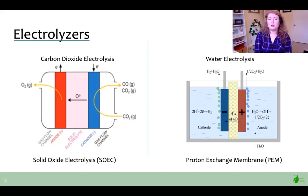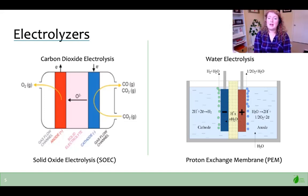For hydrogen production, we are using a proton exchange membrane electrolysis cell, or PEM. PEM has two electrodes pressed against a proton-conducting polymer electrolyte which form a membrane electrode assembly in a zero-gap configuration. This membrane is selectively permeable to protons and is 100 to 300 micrometers thick to avoid ohmic losses. In PEM, water reacts at the anode forming protons and oxygen ions. Hydrogen is formed at the cathode of the cell and oxygen gas is formed at the anode.